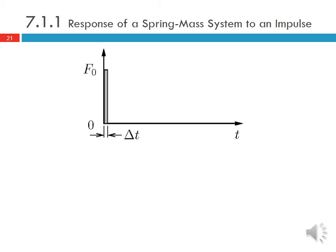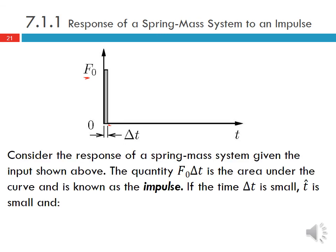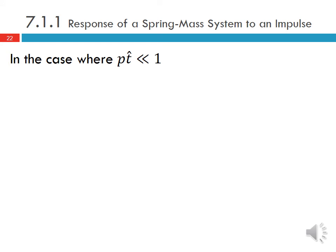Now let's consider the response of a spring-mass system to an impulse. An impulse is where we apply force F₀ and then after a very short period of time we remove that force. The quantity F·ΔT is the area under the curve and is known as an impulse. If the time ΔT is small — meaning p·ΔT is much less than one — then cosine(p·ΔT) ≈ 1 and sine(p·ΔT) ≈ p·ΔT, using the small-angle approximation.